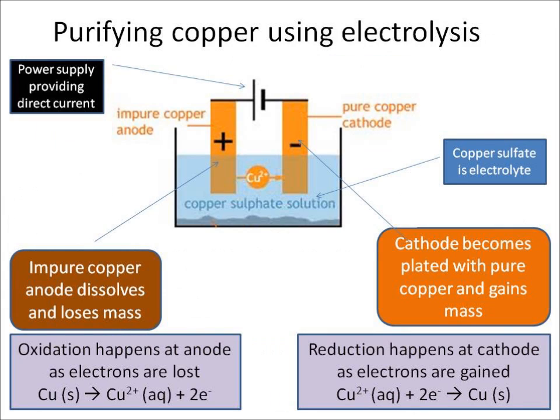So to purify copper, to make it pure, we use electrolysis. We need a power supply, we need two electrodes — one anode and one cathode — and we need something called an electrolyte, which is a liquid which we put the electrodes into.